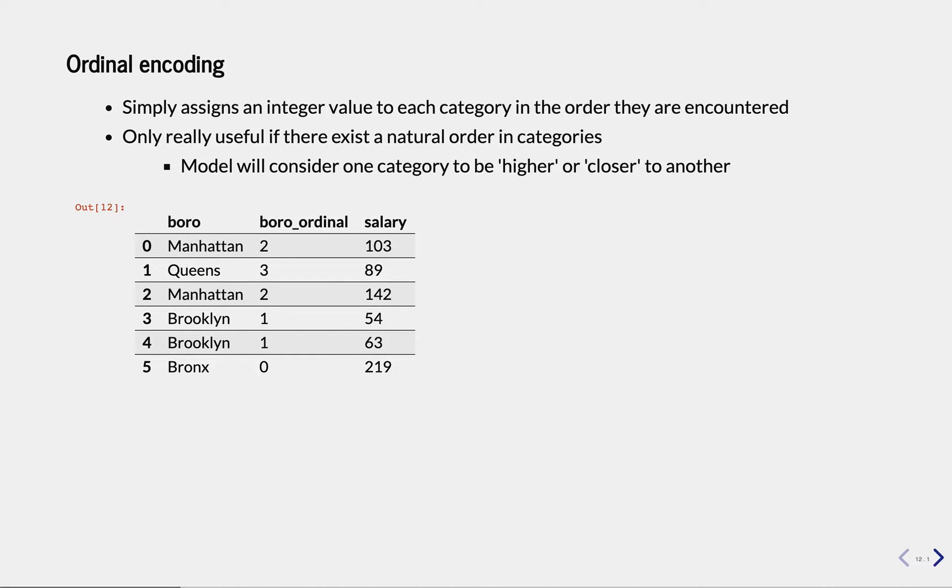The simplest way is just to assign a number. I think it's sorted alphabetically before, so the first one alphabetically is Bronx, which is 0, then you have Brooklyn, which is 1, Manhattan, which is 2.